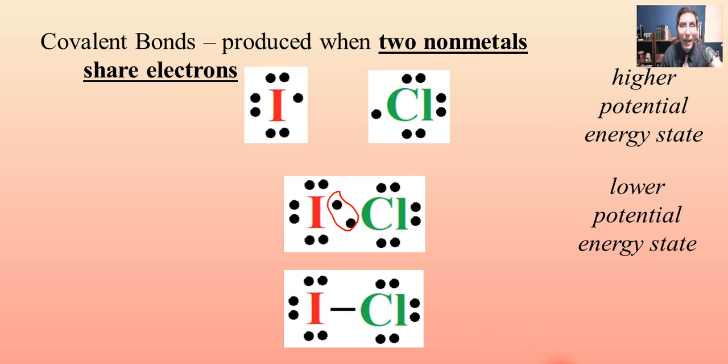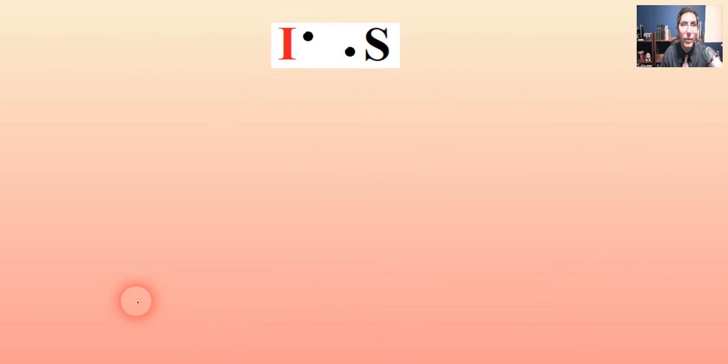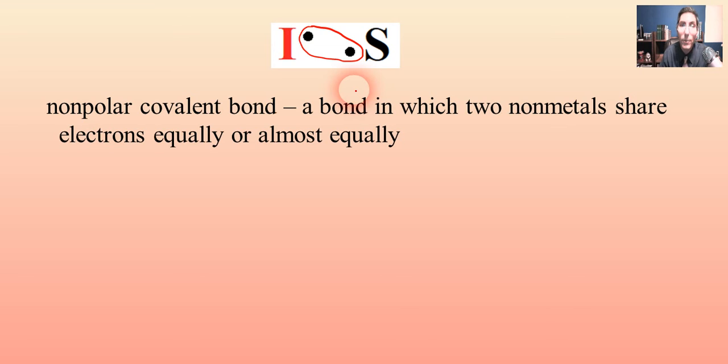Now there are actually two types of covalent bonds. I want to focus on that for a second here. We can have a case like this, iodine and sulfur, and for clarity's sake, I have omitted the extra valence electrons. I know iodine has seven and sulfur has six, but I'm just focusing on these two that are going to be bonding, just to keep things clear. We know that iodine and sulfur are both non-metals, and so they can share these two electrons between them. As it turns out, iodine and sulfur will both share that electron pair fairly equally. They're fairly equitable in that sharing relationship there. This is something called a non-polar covalent bond.